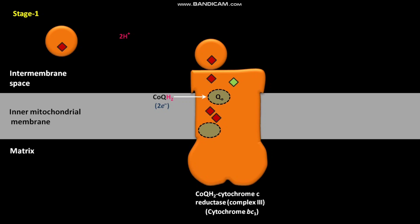One of the two electrons released from COQH2 first moves from the QO site to an iron-sulfur protein (FAS protein), then from the FAS protein to cytochrome C1, and finally from cytochrome C1 to cytochrome C. The other electron moves from the QO site to cytochrome BL, then from cytochrome BL to cytochrome BH, and finally from cytochrome BH to the QI site in complex III.